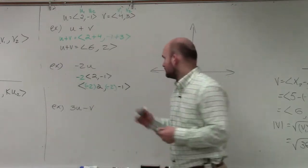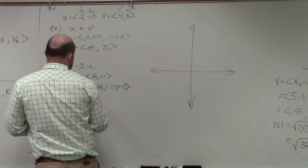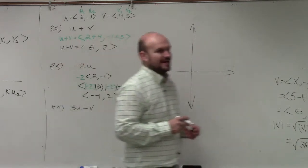OK? You guys can put these in parentheses if you like. So therefore, my resultant vector is negative 4 comma 2. Would everybody agree with that?